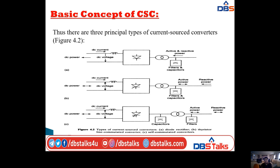There are three principal types of current source converters represented in three diagrams. The first gives the diode converter, the second gives the thyristor line-commutated converter, and the third gives the self-commutated converter. The first diagram consists of a diode; the second and third consist of thyristors, i.e., turn-off devices. On the left side we have a transformer, filter, and capacitors, and on the right side we have reactors. For the last diagram we have two capacitors and one transformer, where one capacitor acts as a capacitor and one acts as a filter.